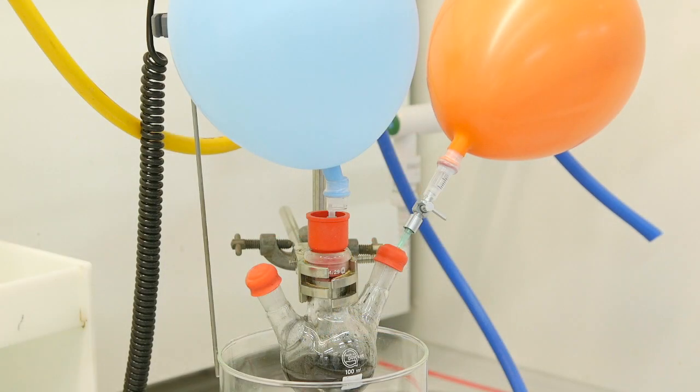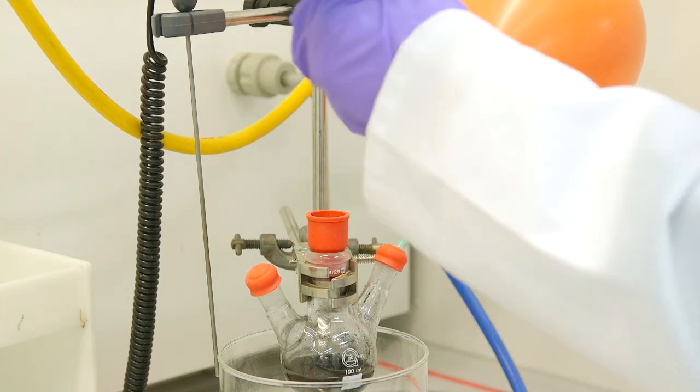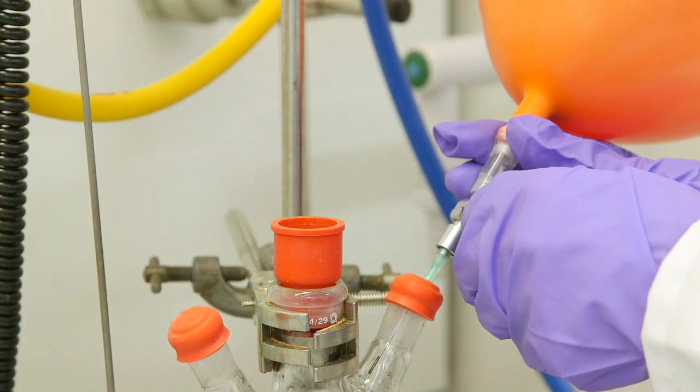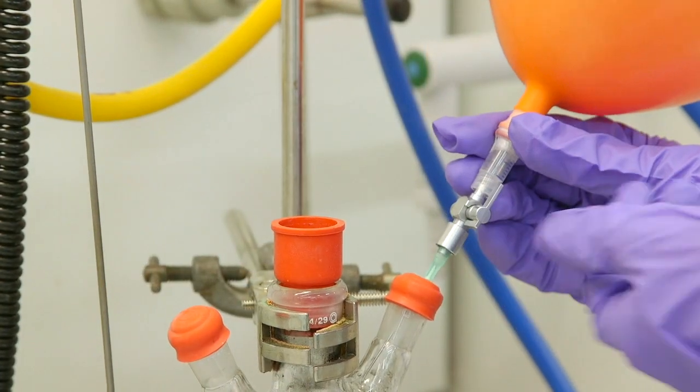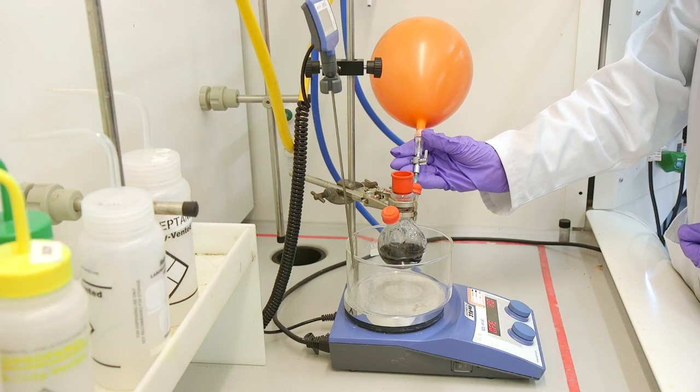We will then re-evacuate one more time and now open up the lure lock to allow hydrogen to pass into the reaction flask. We have now successfully set up our hydrogenation reaction. This can be left until the reaction is complete.